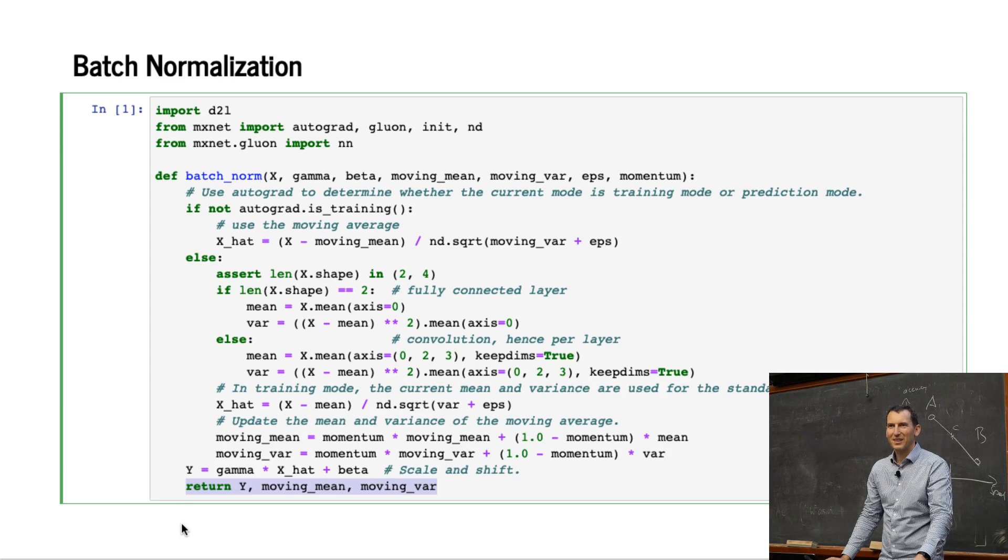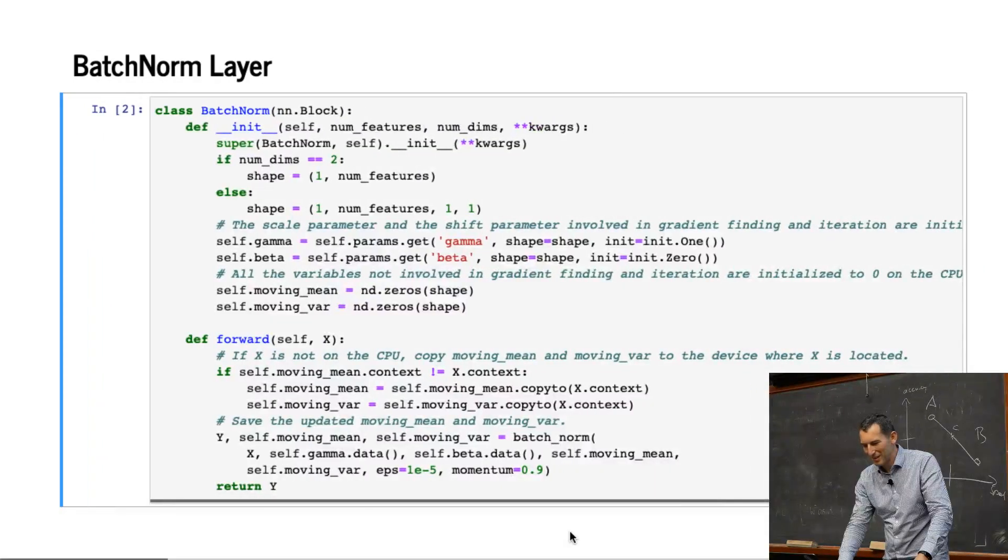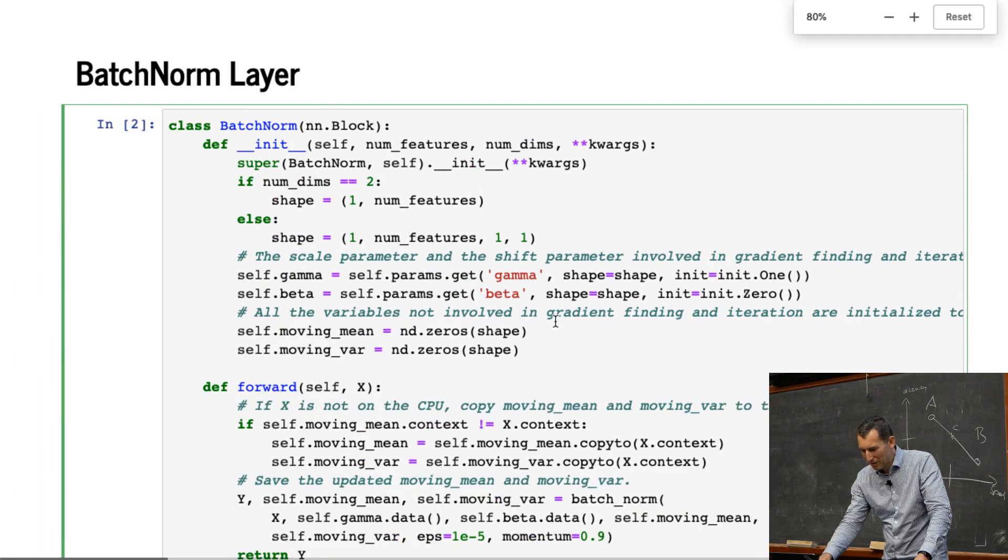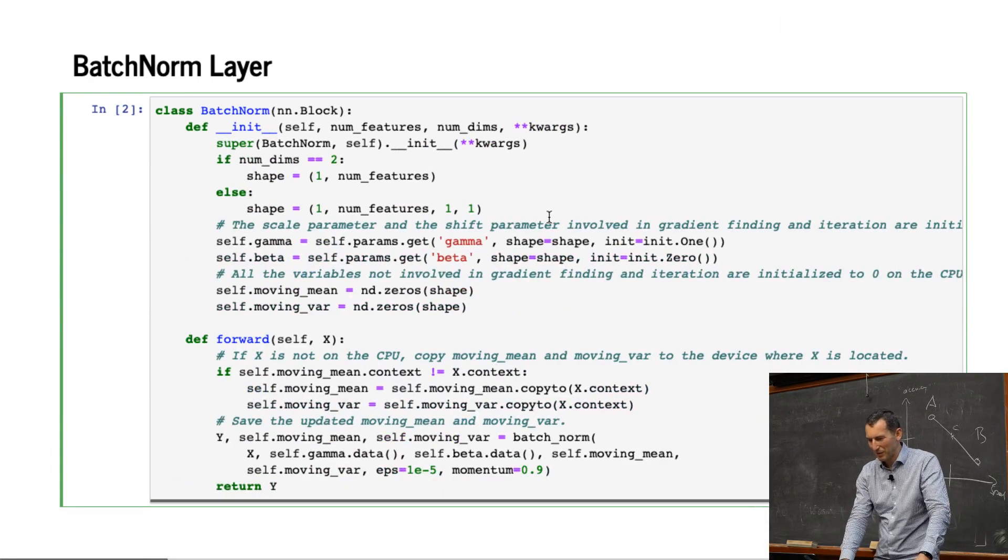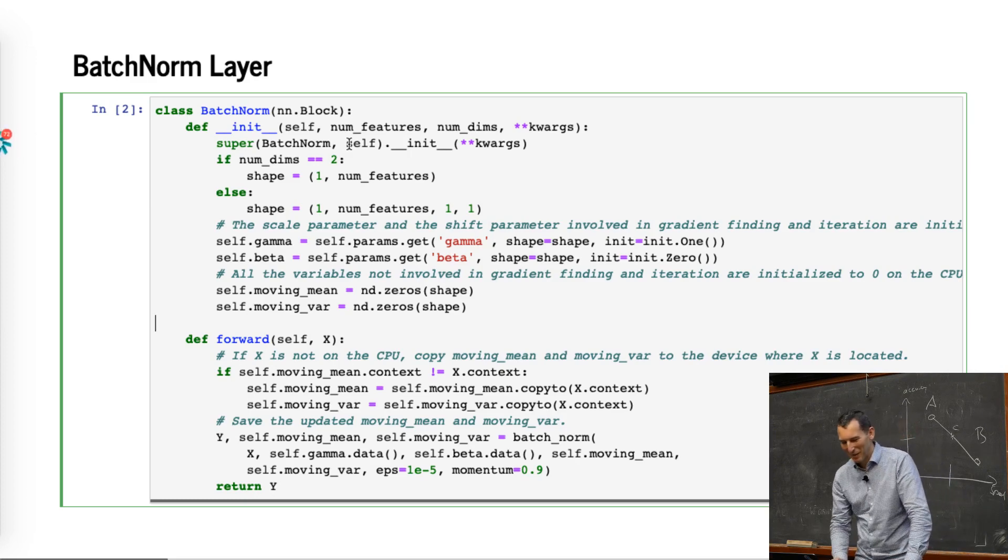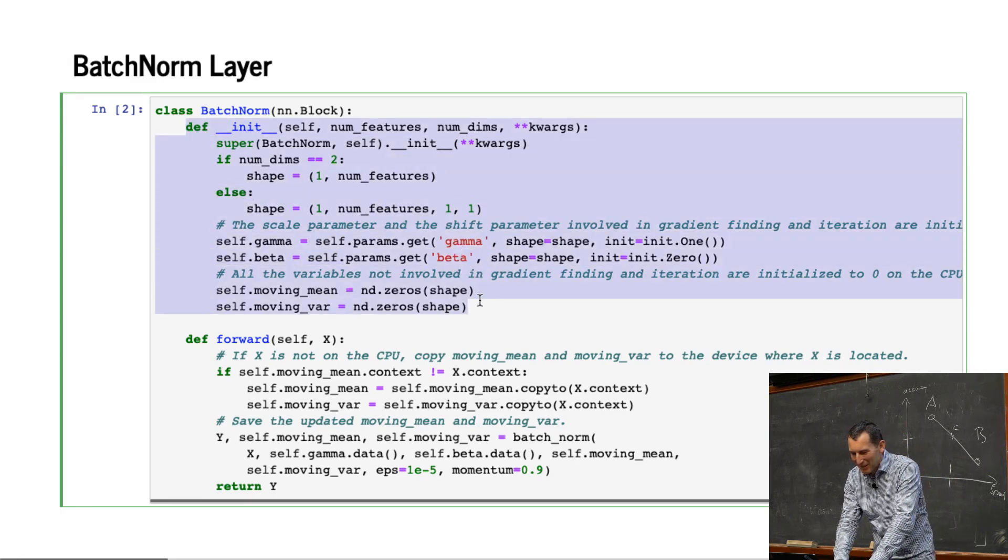Okay. Everybody cool with that? Good. So let's move on because once we have that, everything else is easy. So now we need to turn this into a layer definition. Sorry, somebody is urgently trying to reach me and I really don't have time. So basically, initialization of the batch norm layer.